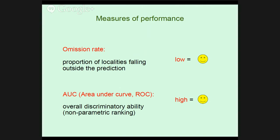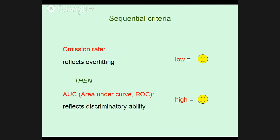We wanted to use more than one single metric to evaluate our models quantitatively. Maria thought a weighting scheme would be very arbitrary, so she developed the idea of sequential criteria. She said, 'All we really know is where the species is, so omission rate — which reflects overfitting — should be our first criterion.' She found the settings that give the best omission rate. Then of those settings, she looked at AUC to see which one does better regarding overall discriminatory ability.